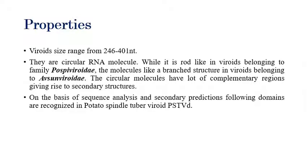Viroid size ranges from 246 to 401 nucleotides. They are circular RNA molecules with rod-like secondary structures in viroids belonging to Pospiviroidae. There are two groups of viroids: Pospiviroidae and Avsunviroidae. So far, 40 viroids have been discovered that infect plants, and all belong to these two groups.